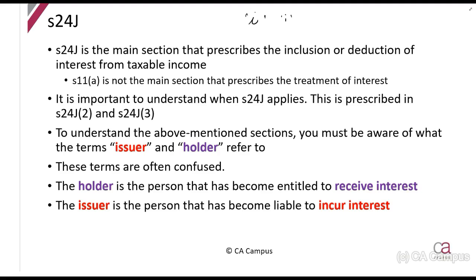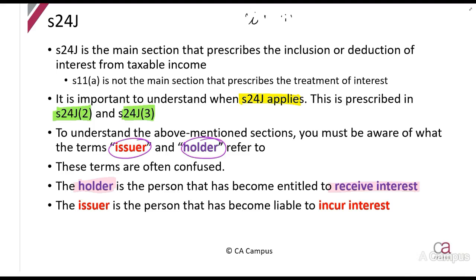The main sections to focus on first are Section 24J(2) and Section 24J(3). These are the sections that tell us when Section 24J applies. The terms used very often in these sections are 'issuer' and 'holder.' A holder is the person who holds the instrument and holds the benefits — that person is the one who will be receiving interest. The issuer is the person who has issued the instrument and will be liable for the interest — the person who is going to be paying it. So for the holder, this is income, and for the issuer, this is an expense.